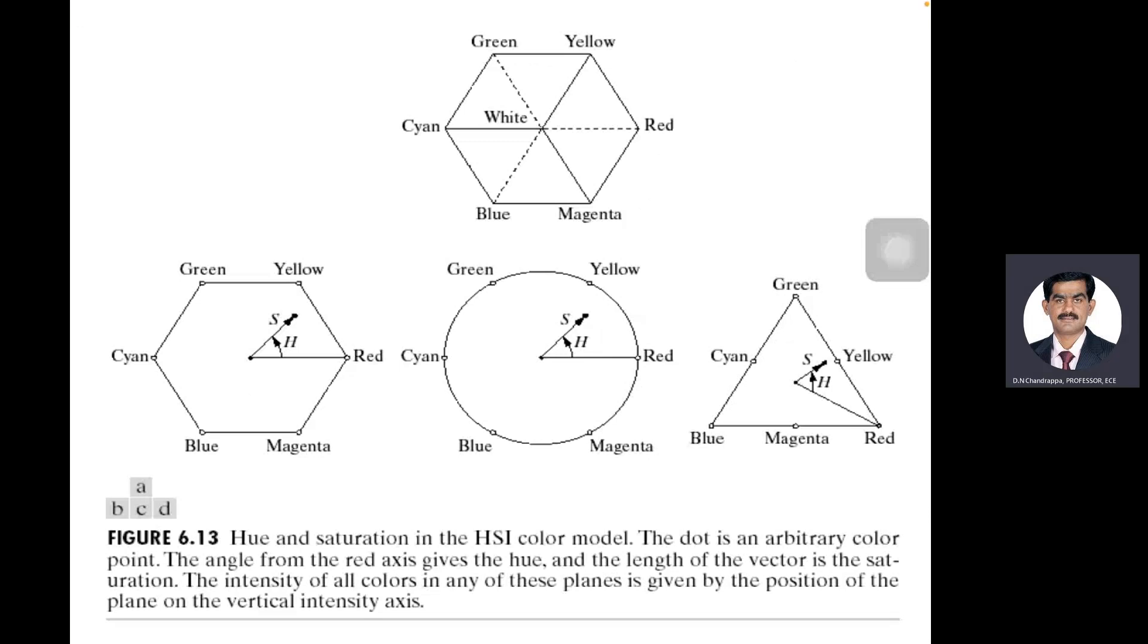Now we'll come to another two: pseudo colors and true colors. What do you mean by pseudo colors? Assigning color to gray level values based on certain criteria is called true colors. Major use is interpretation of gray level images. Here two main techniques are used: one is called intensity slicing, second one is called color transformations.